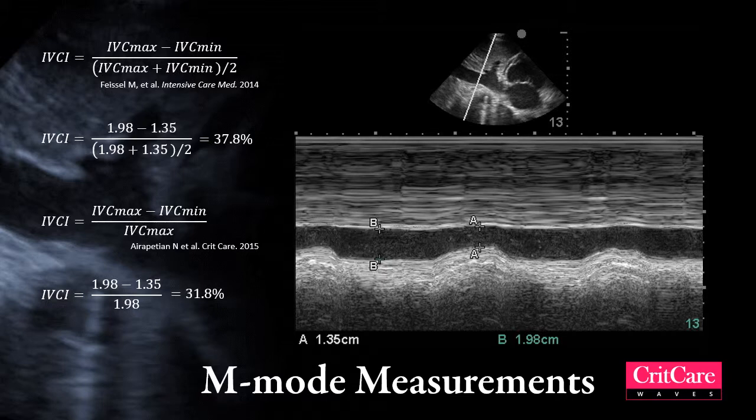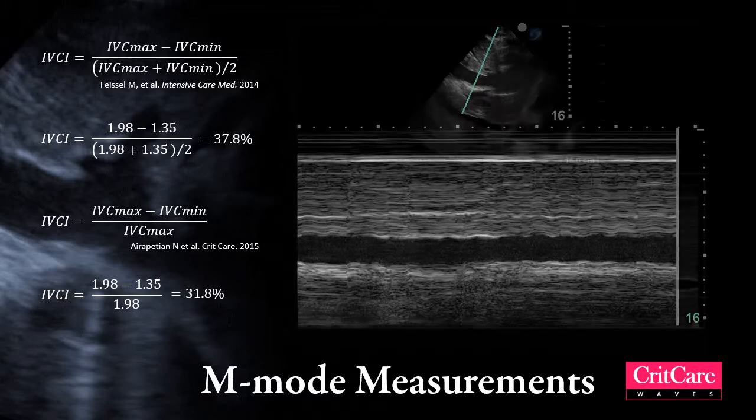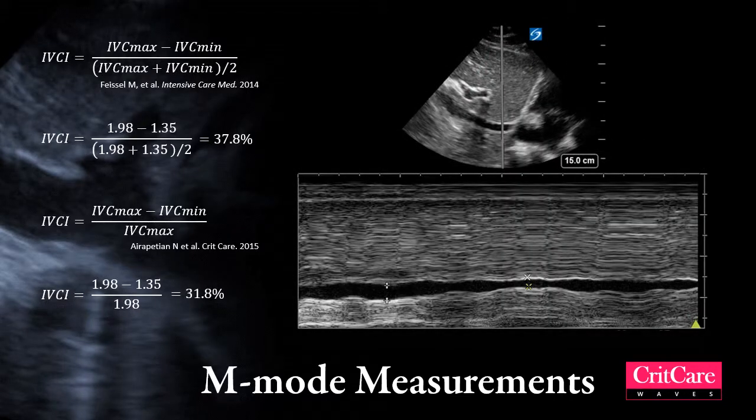This is an example of an IVC that's very distended and does not collapse with respirations, as opposed to this IVC that collapses a fair amount with respirations.